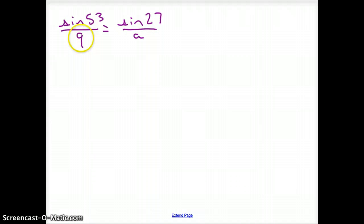I go sine of 53. That is going to go over 9. And, that equals sine of 27 because that was angle a. And, that goes over side a. That is an a. That is a 9. We rock this out. Sine of 53 is 0.7986. That goes over a 9 equals 0.454. That goes over an a.